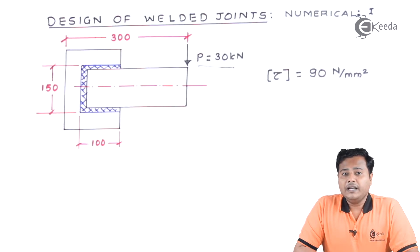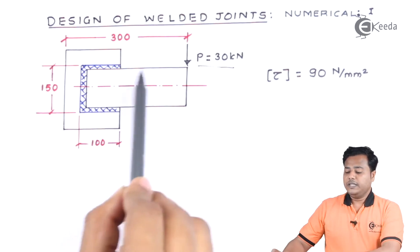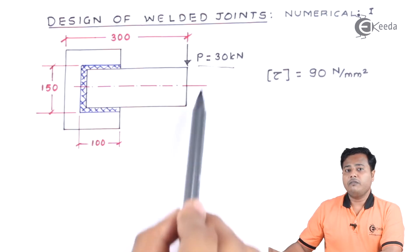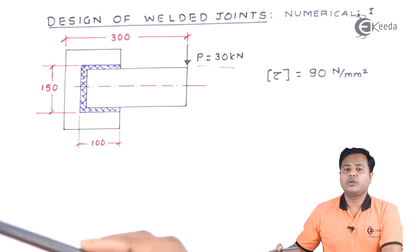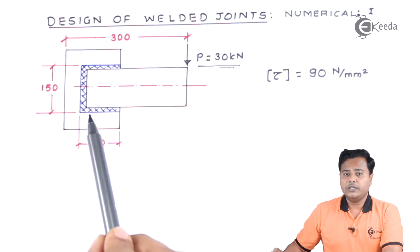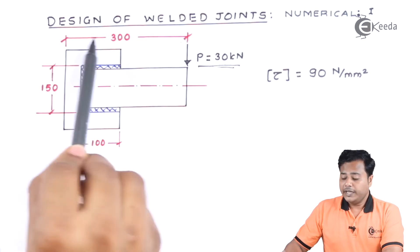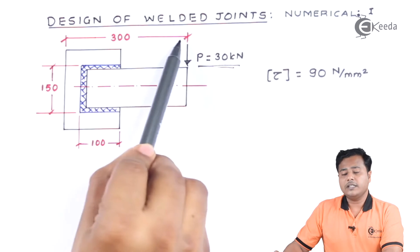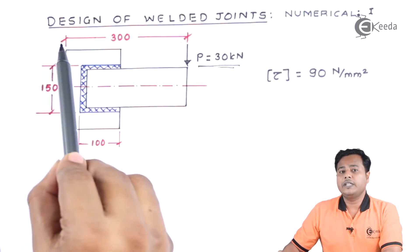As you can see on the screen, the problem statement is given. There is no written statement, but a diagram is given, and that is what the statement is all about. They say: design this particular weld joint for the given arrangement. The first important thing is the given load, which is 30 kilo Newton. We will say this is the eccentric load, and the eccentricity is not directly given — a certain distance is given that is required to find out the eccentricity.